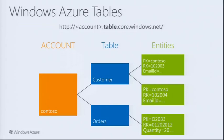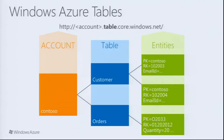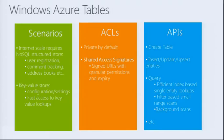Windows Azure Table is a NoSQL solution — a scalable, autoscale solution for structured storage where the namespace is account.table.core.windows.net. Once you have an account, you can start creating tables and storing entities. These entities are schema-less with three mandatory properties today. Two form the clustered index — partition key and row key — and the rest of the properties are schema-less name-value key-value pairs.